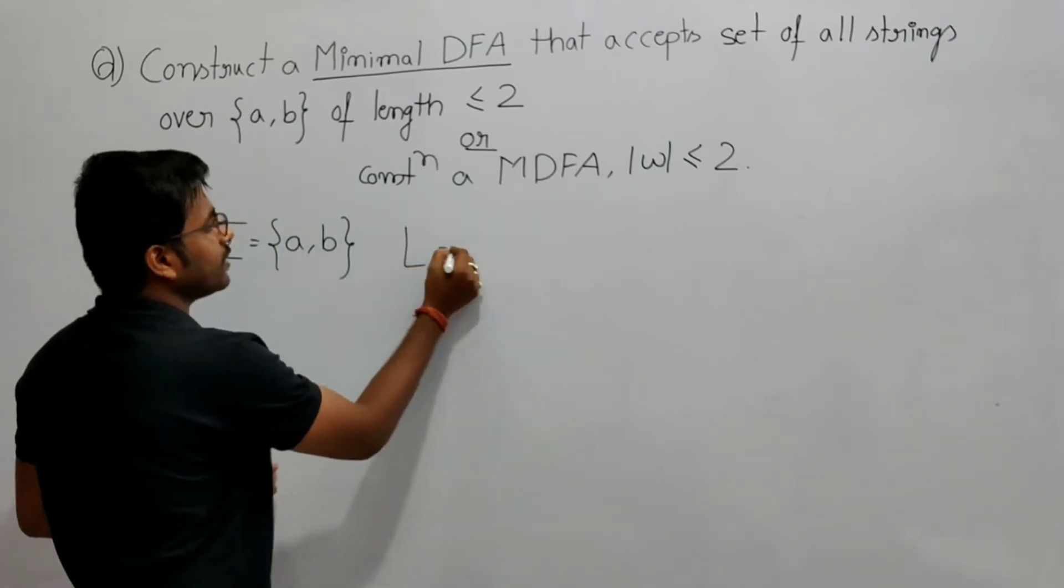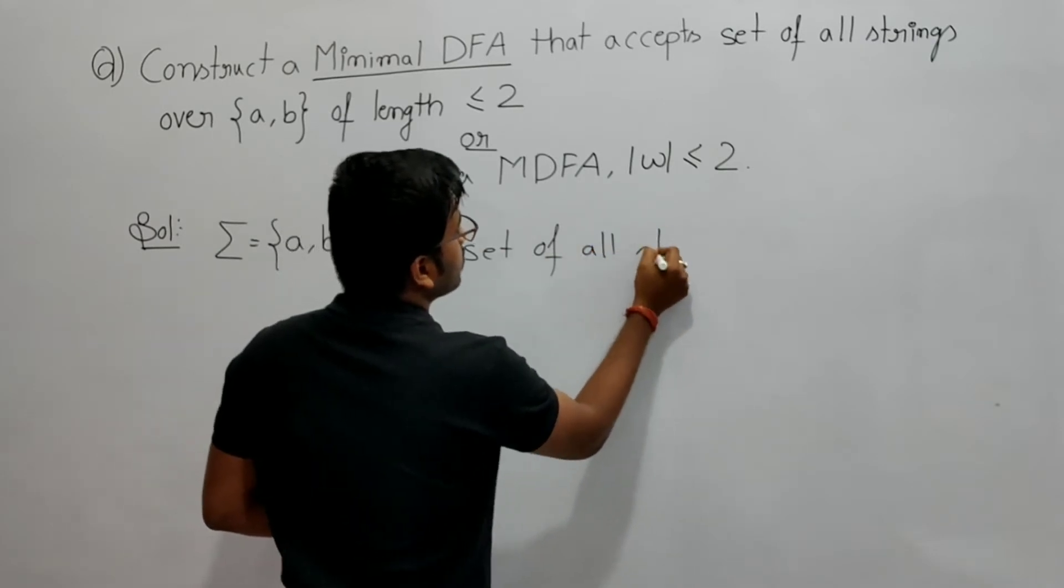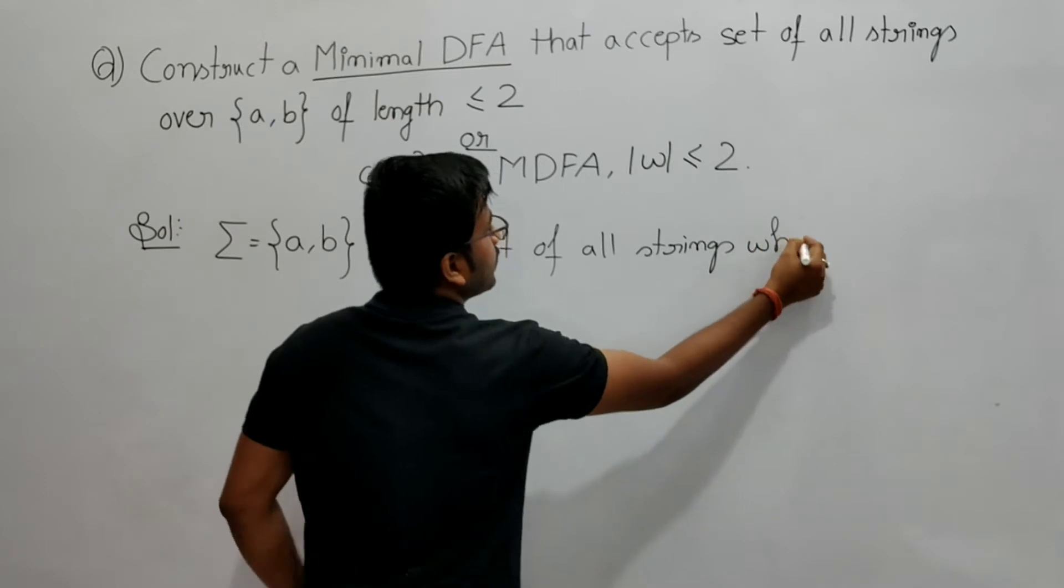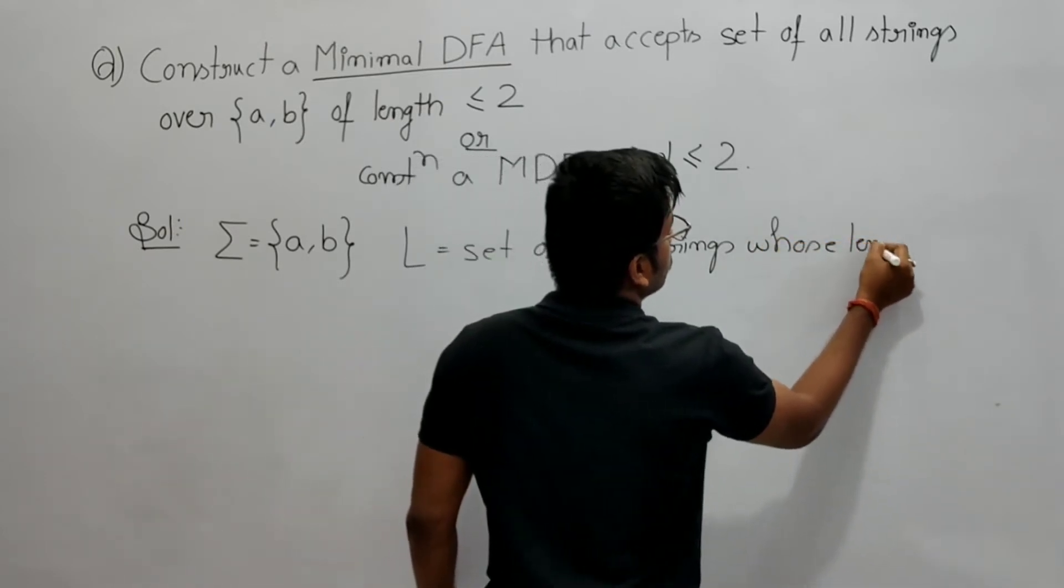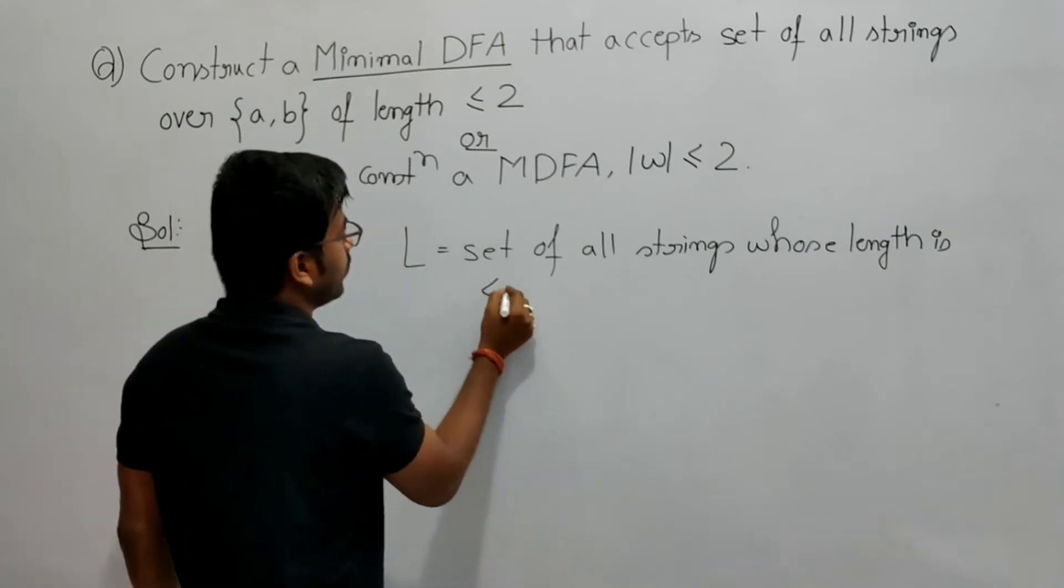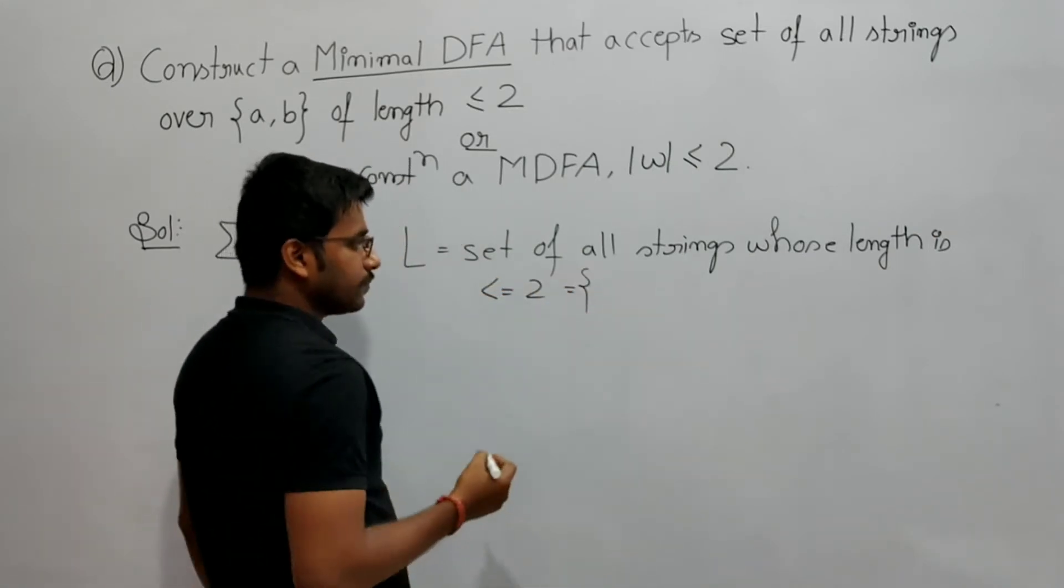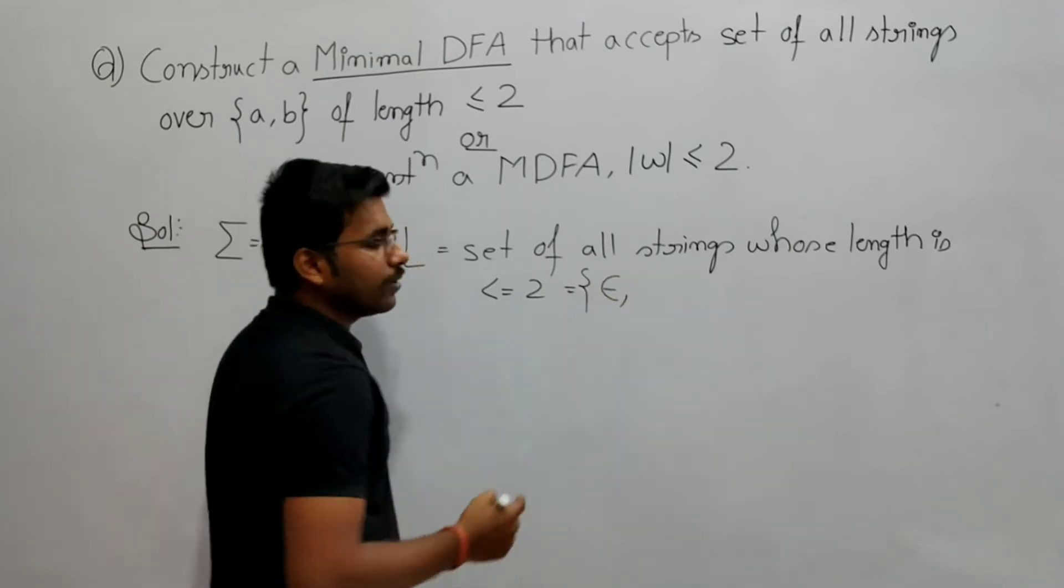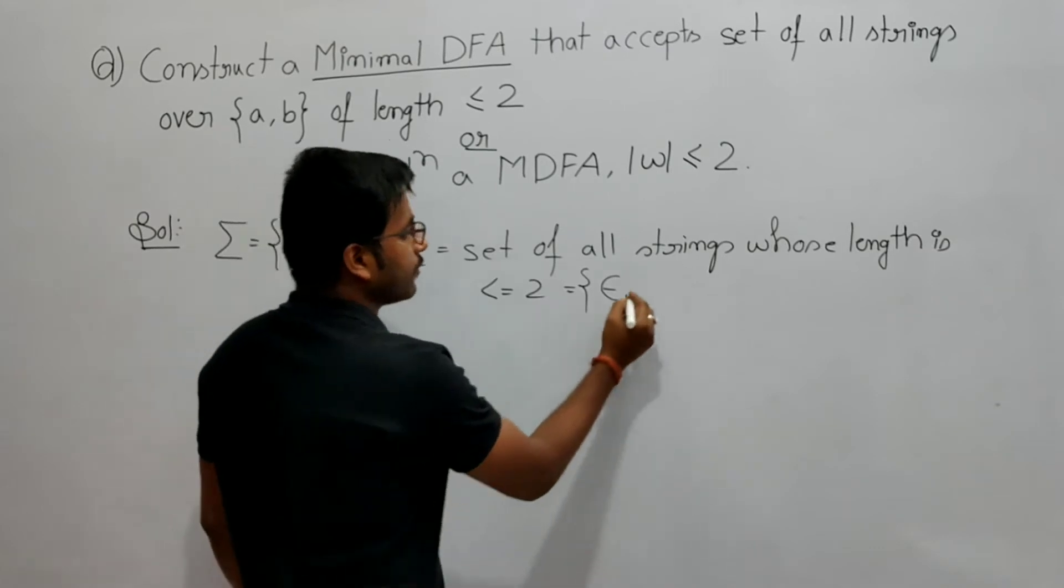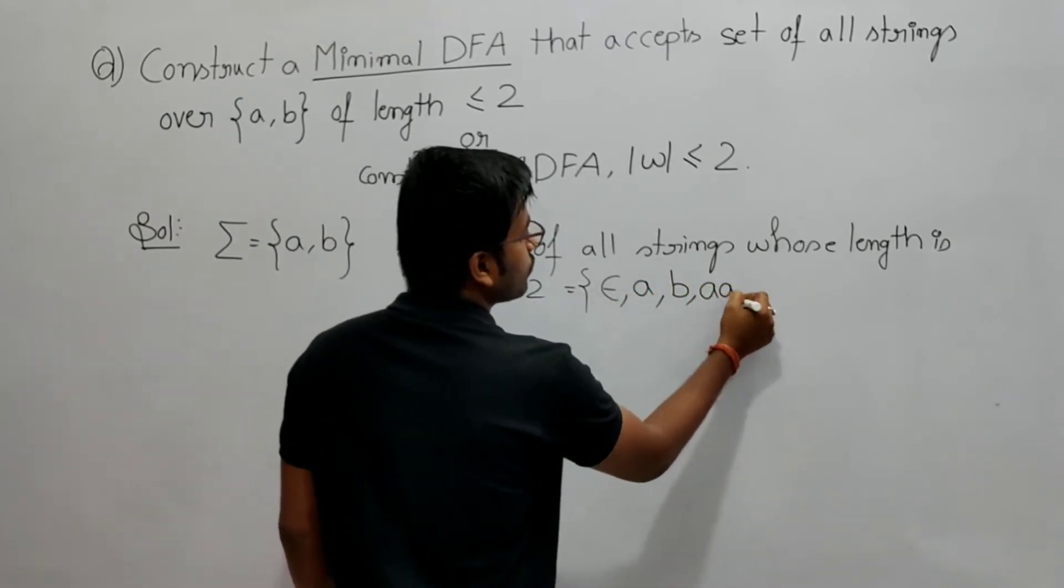This means the language now contains the set of all strings whose length is smaller than or equal to 2. So it contains epsilon because its length is 0, it belongs to this. a belongs to this, b belongs to this, aa belongs to this, ab, ba, bb.